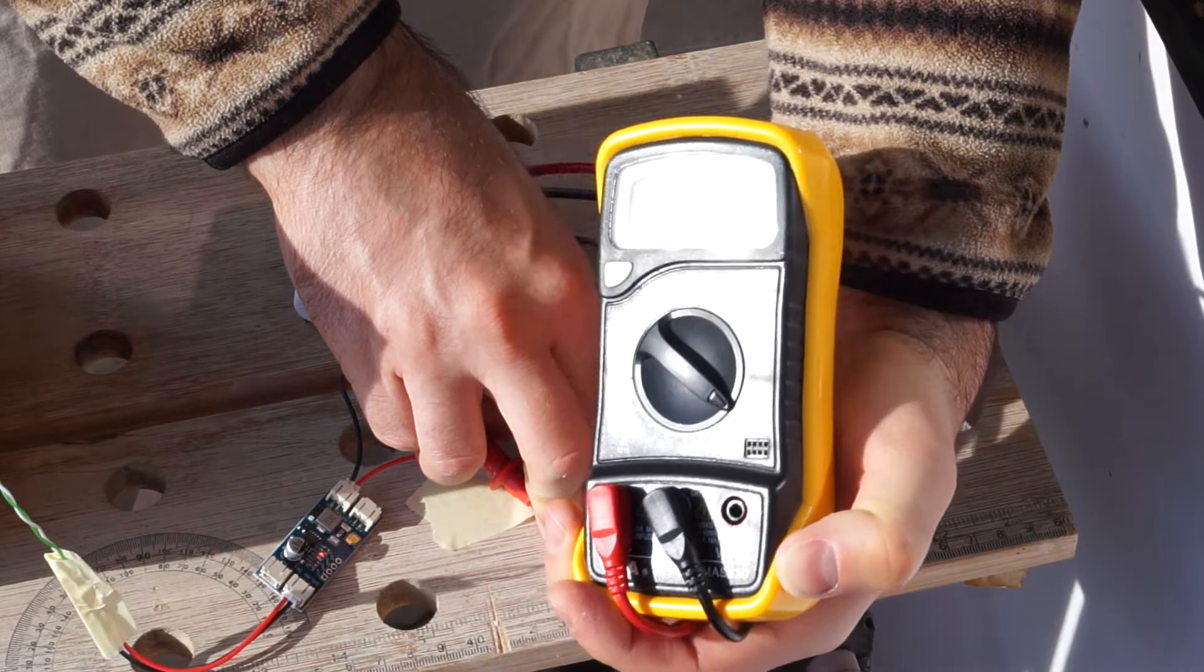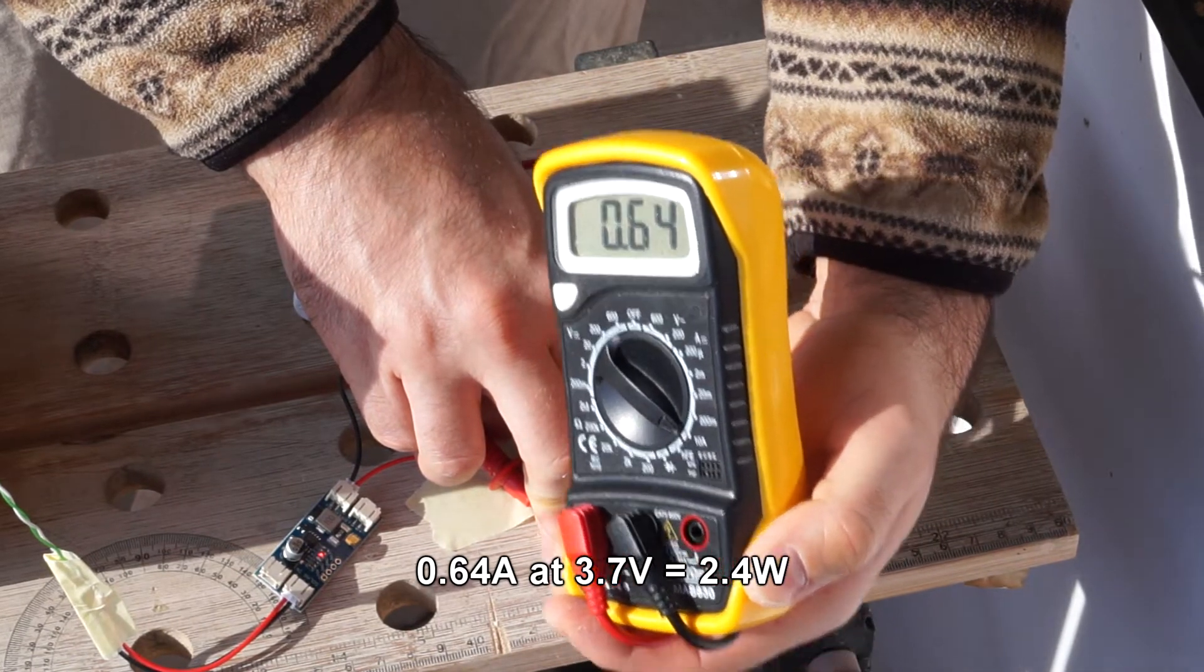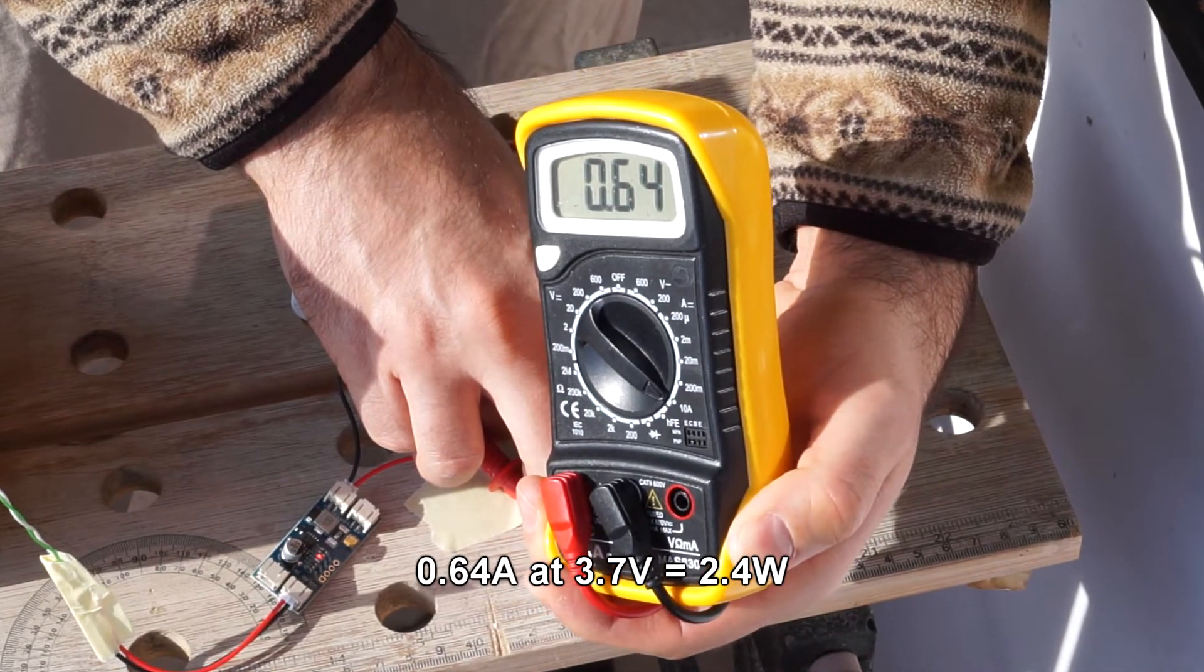Luckily, it was a sunny day, so the solar cell was putting out a fair amount of power, between 2 and 3 watts. I called this a success and I proceeded with designing the enclosure.